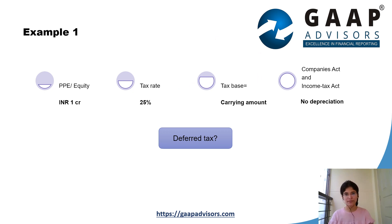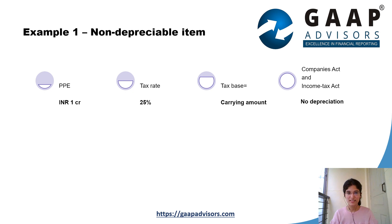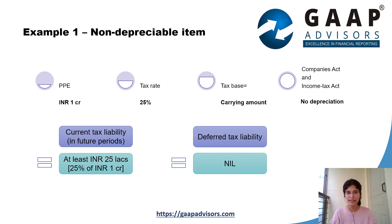Assuming the tax rate to be 25%, by virtue of owning this asset of 1 crore rupees, the tax liability the company will have to incur in the future should be at least 25 lakh rupees. That's because the company will have to earn at least 1 crore rupees to recover the carrying amount of the asset, which will create a tax liability of at least 25%, that is 25 lakh rupees. The carrying amount under the Companies Act and as per the Income Tax Act is the same. Therefore, there is no temporary difference and accordingly no deferred tax arises. The actual tax liability will be recognized in the future as current tax liability as the company generates income through use of the asset.